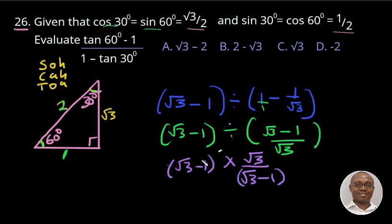So now I can see that we can cross out these two. So we are left with the √3. That is our final answer. So option C is the right answer.